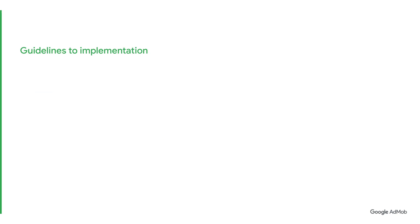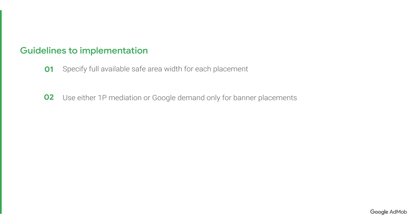There are four key guidelines for optimal Adaptive Anchor Banner implementation. First, specify the full available safe area width for each implementation. Note that when specifying width, we recommend that you set the device width dynamically, so that each banner will try and fill the entire width of the screen. Second, developers using either AdMob Mediation or Google Demand Only for banner placements are eligible for Adaptive Anchor Banners. Developers using Mediation need to ensure that their mediation adapters are updated to the latest versions.